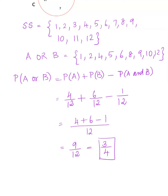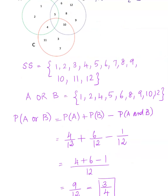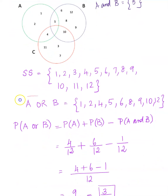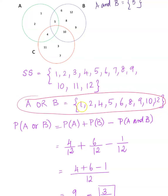This is using your addition rule. Here you notice that P of A and B gave you a number, which means A and B are not mutually exclusive — we found 5 to be common. If you did not find anything common, that would become a 0, indicating that A and B are mutually exclusive events. Doing it directly, A or B had 9 elements out of 12, giving the same 9/12, which is 3 over 4. The formula uses P(A and B) to eliminate duplicate counts.